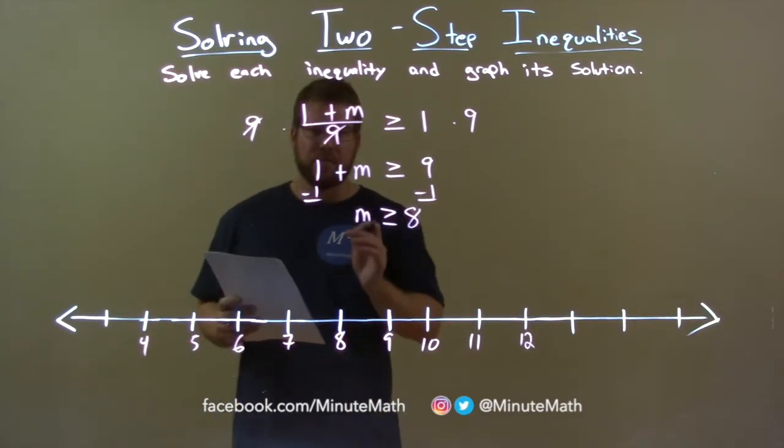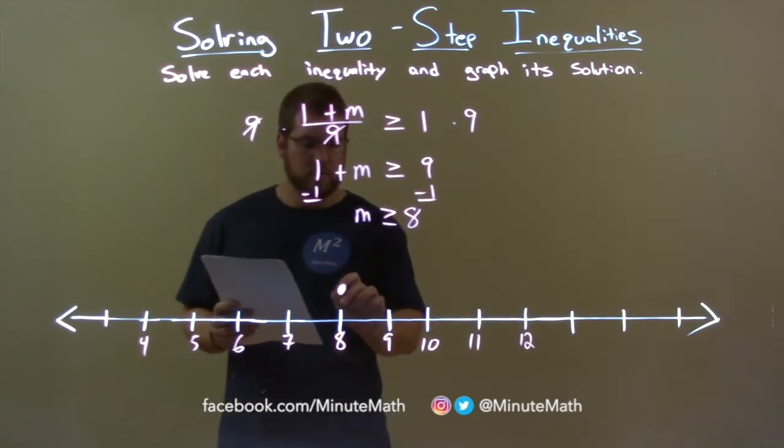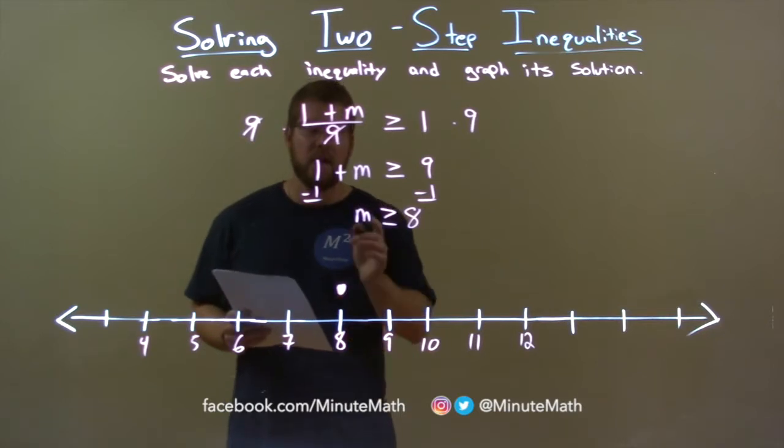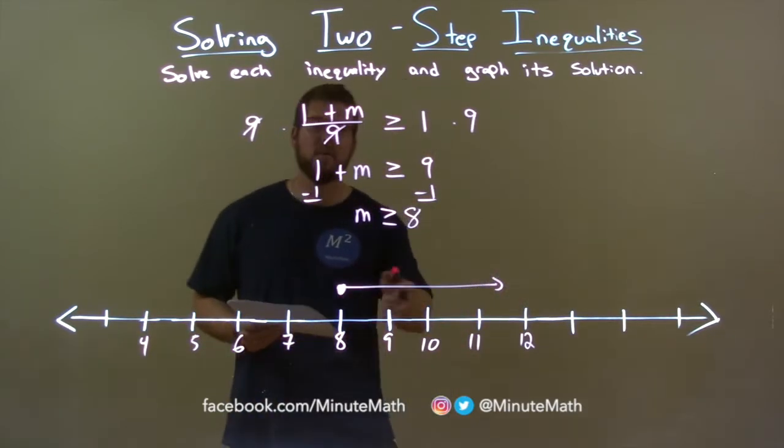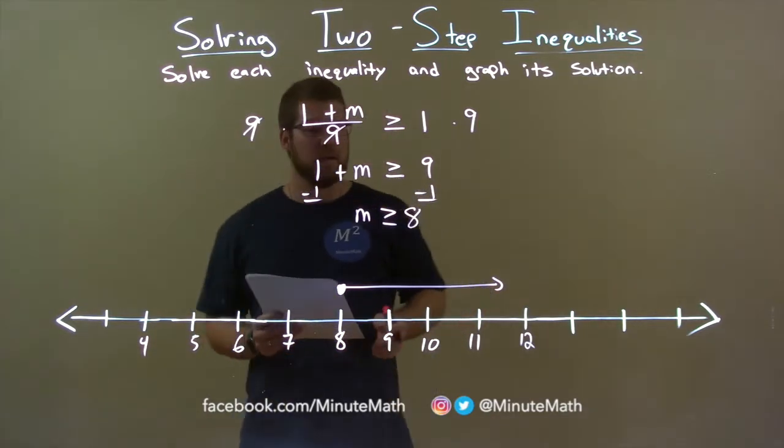m can equal 8, so that means we put a closed circle right here at 8. m is also greater than 8, so the arrow goes to the right, and there we have it. Our graph matches our final answer, m is greater than or equal to 8.